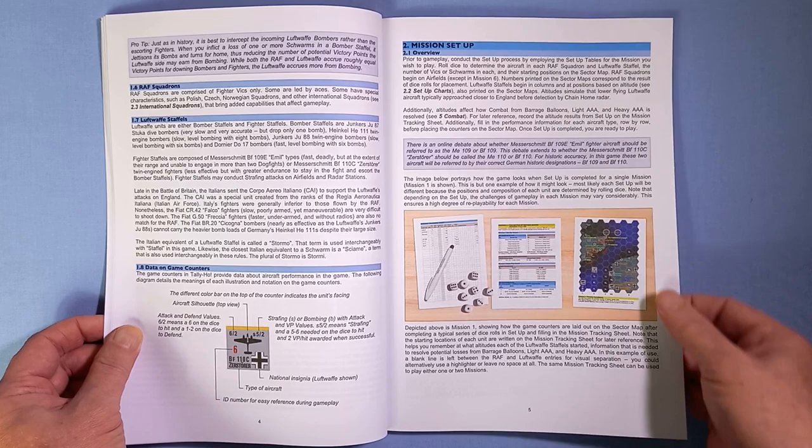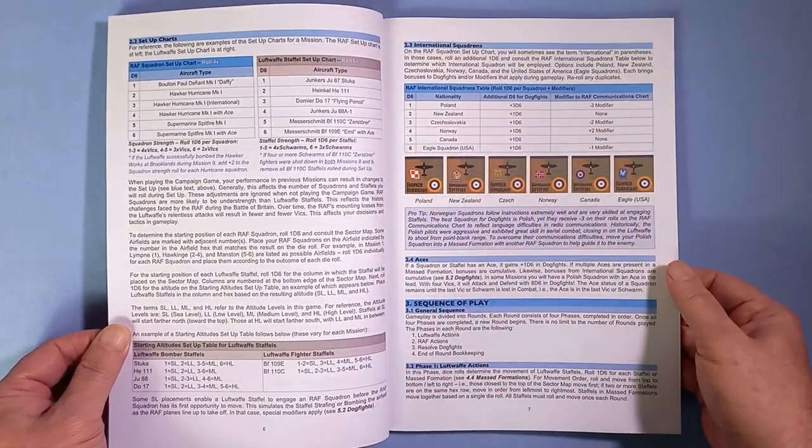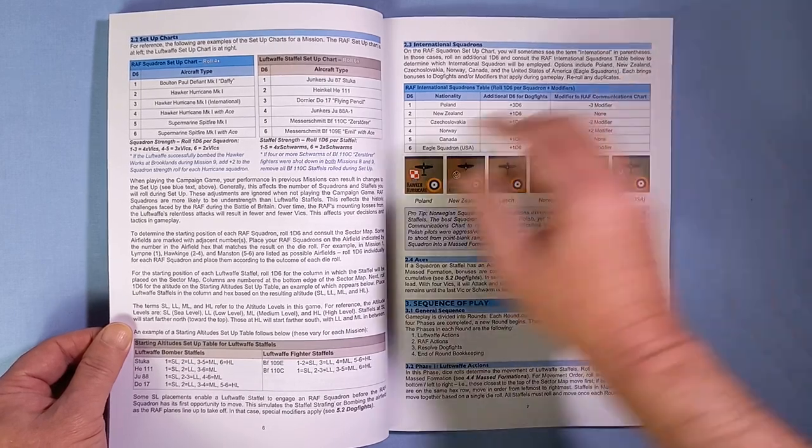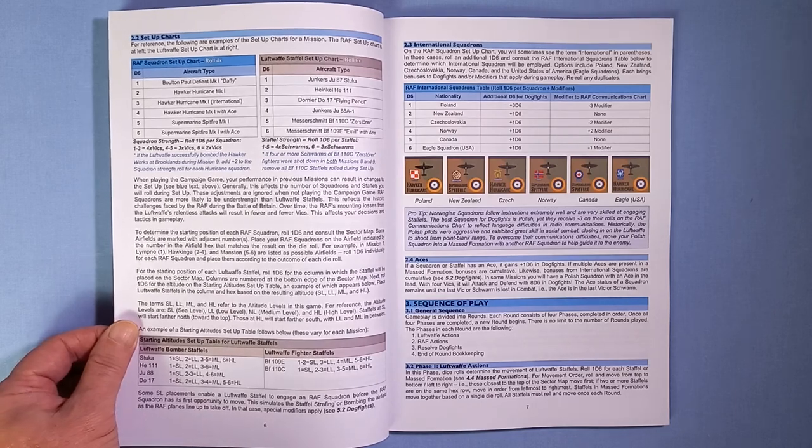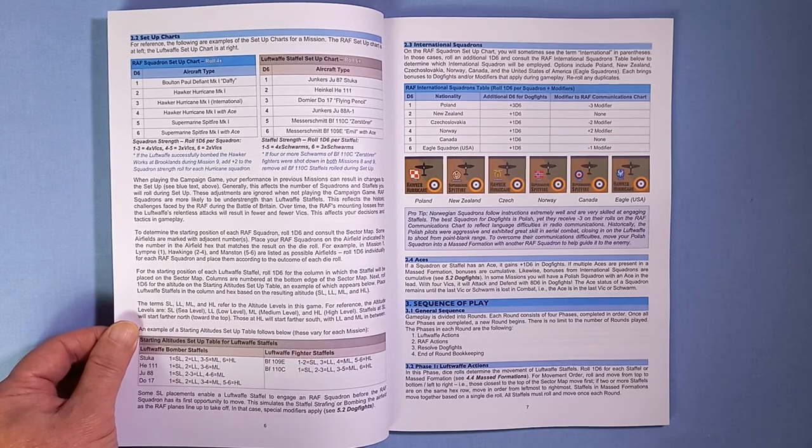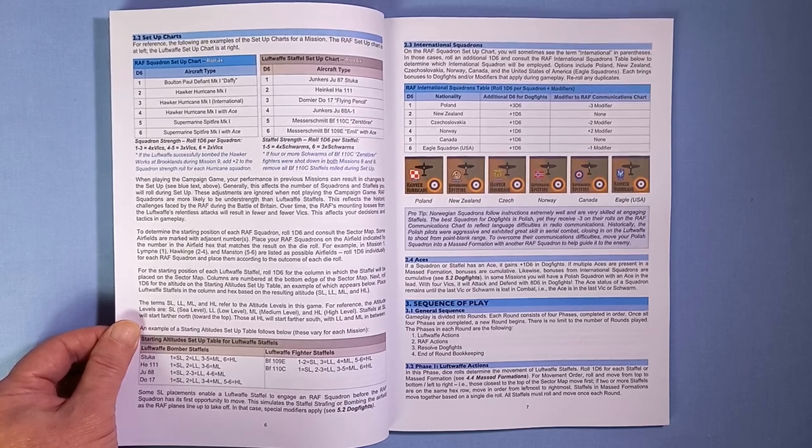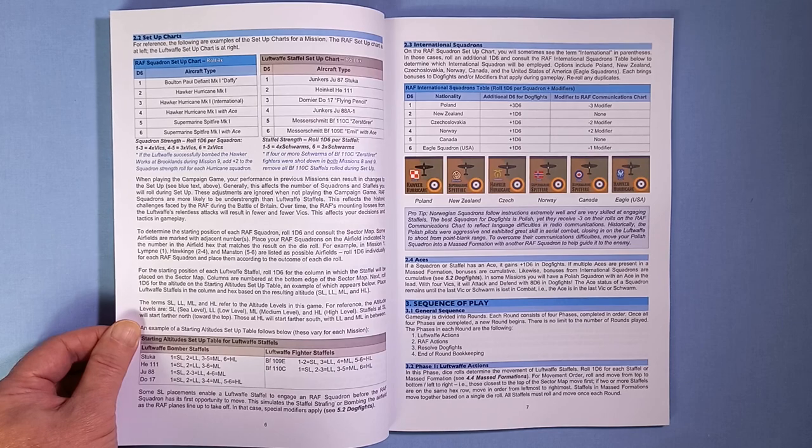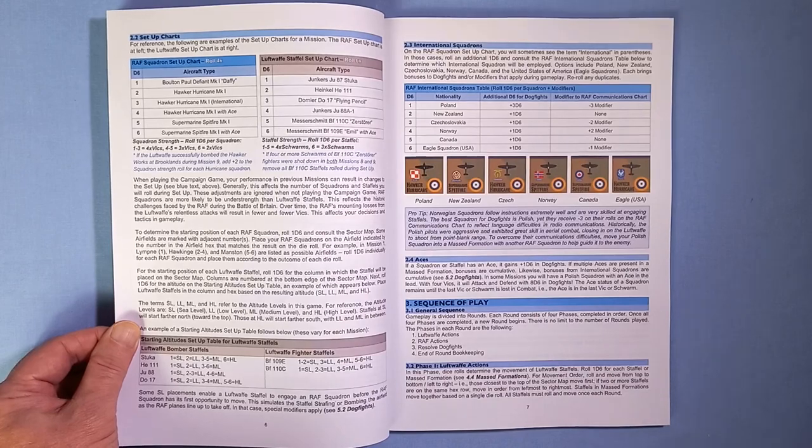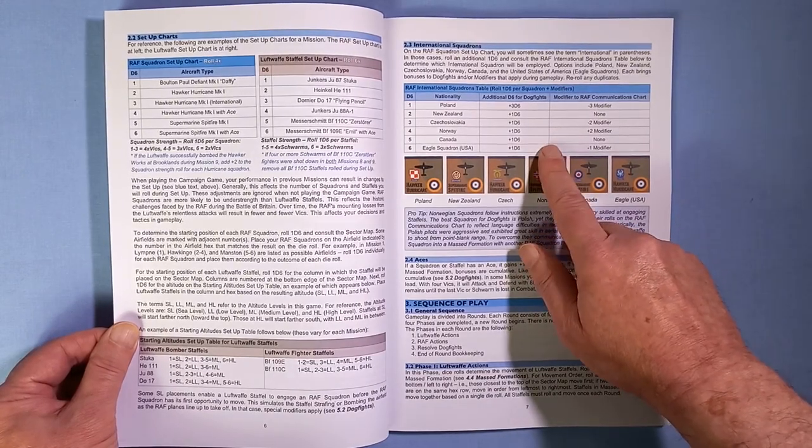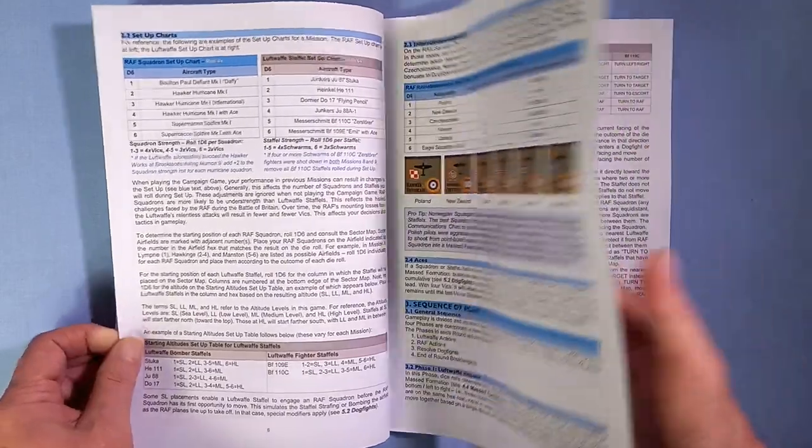How to set up the mission with the setup charts, rolling to see what squadrons are involved in that mission. And the Italians make an appearance at the end as well. The RAF squadrons are made up of Vics, those V-shaped formations they used. And the Germans using the staffel - they're made up of swarms. And there are some international squadrons, which will adjust your dice throws with modifiers. Sequence of play.